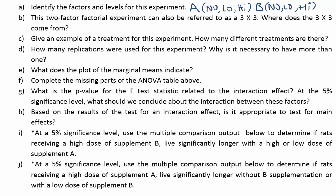Let's look at question B. It says, this two-factor factorial experiment can also be referred to as a three-by-three. Where does the three-by-three come from? It comes from those factor levels. You have three levels for factor A, and you have three levels for factor B. Because we have three levels for the two factors, that's why it's called a three-by-three experiment.